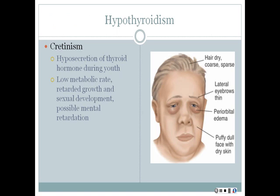Cretinism is characterized by a low metabolic rate; there can be retarded growth and sexual development and possible mental retardation. Hypothyroidism can occur at any age, but if it occurs during youth it can lead to cretinism.